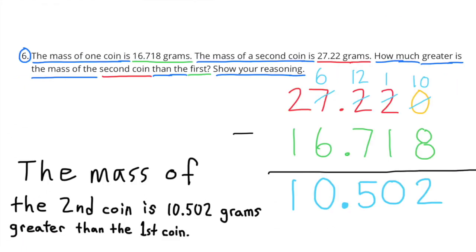Number 6. The mass of one coin is 16.718 grams. The mass of a second coin is 27.22 grams. How much greater is the mass of the second coin than the first? Show your reasoning. 27.22 grams minus 16.718 grams equals 10.502 grams. The mass of the second coin is 10.502 grams greater than the first coin.